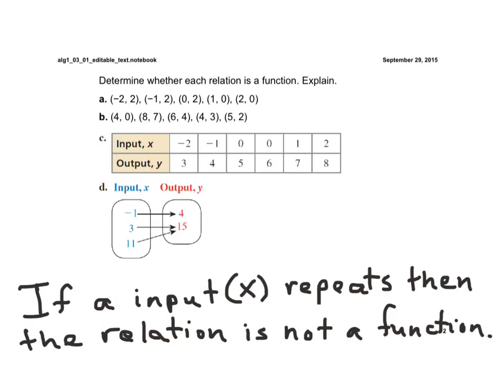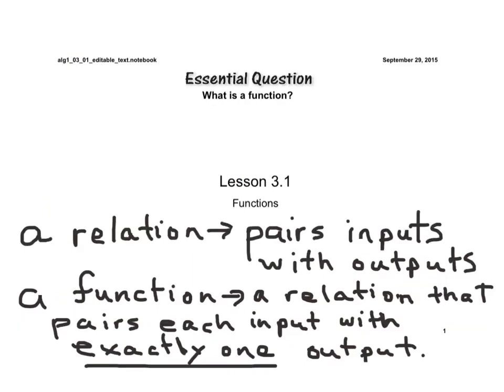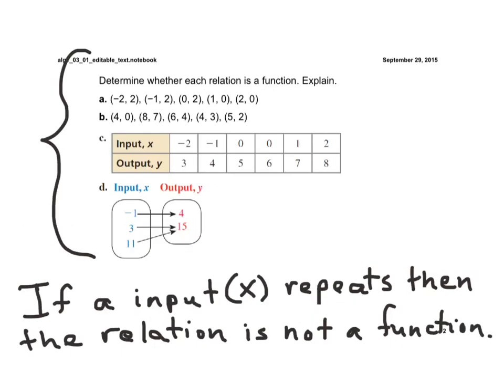We're first asked to determine whether each relation is a function. First of all, all of these are relations. Any pairing of an x to a y or an input to an output. So, to determine if it's a function, remember what a function was. A function is a relation that pairs each input with exactly one output.